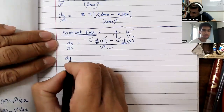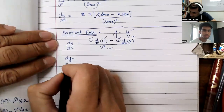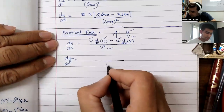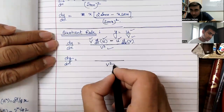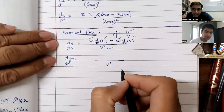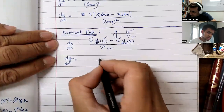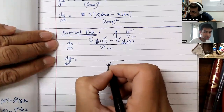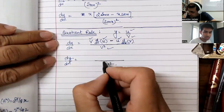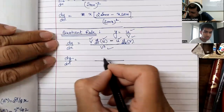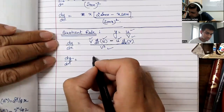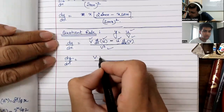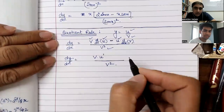In short form: denominator whole square in the bottom. V into U dash — denominator V as it is, multiplied by the derivative of the numerator U dash.